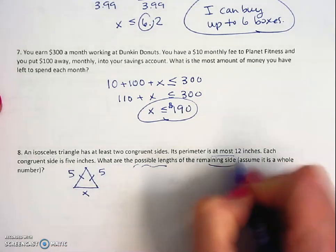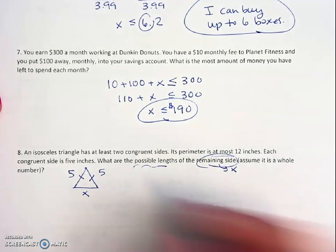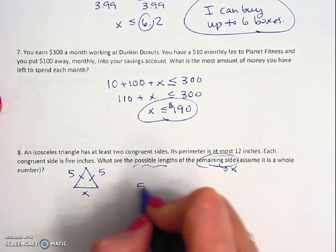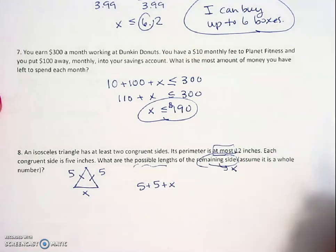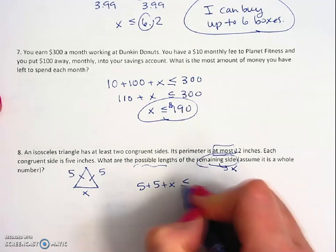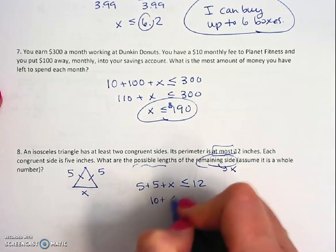So the perimeter is where you add up all the sides, so 5 plus 5 plus x is at most 12, so it has to be less than or equal to 12. So we get 10 plus x.